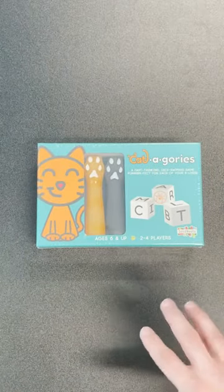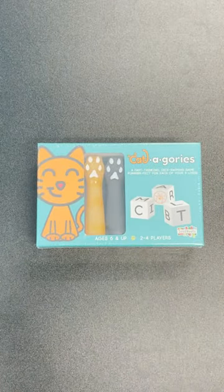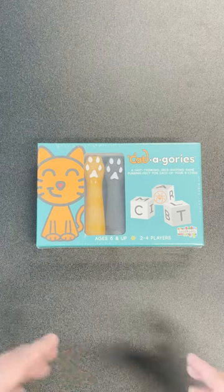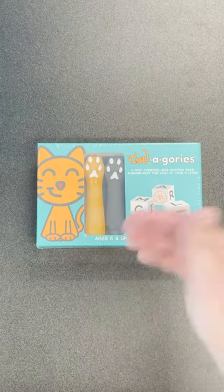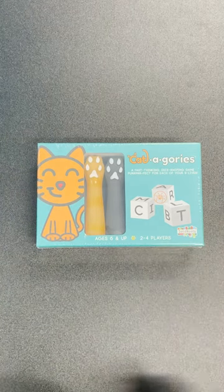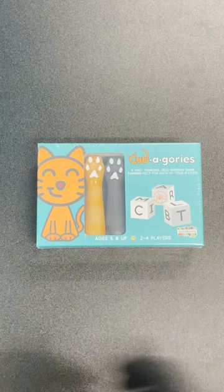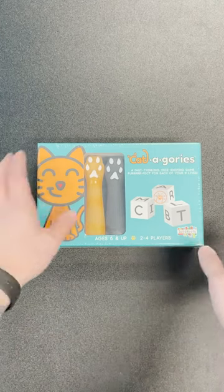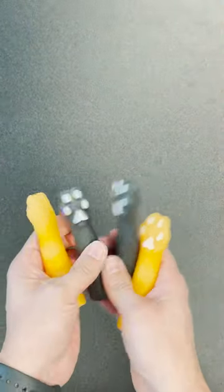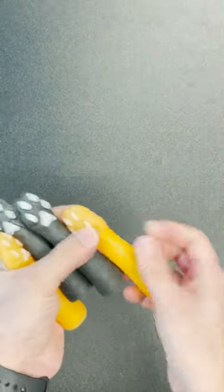Hey everyone, this is Category, a fast-thinking dice-swiping game that's so much fun for kids and adults. It helps build vocabulary, and it comes with four great cat paws.